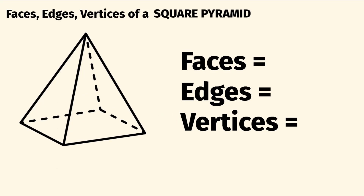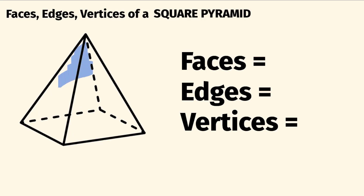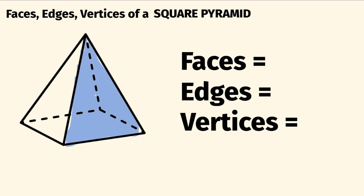So let's start out with the number of faces. This is the amount of flat surfaces a shape has. The amount of surfaces a square pyramid has — we can go through and count these. We have this base here, so that's one. And then going around making the pyramid shape, we have one at the back here, a surface on the side here, a surface on the side here, and one at the front. So all together, we have five faces.